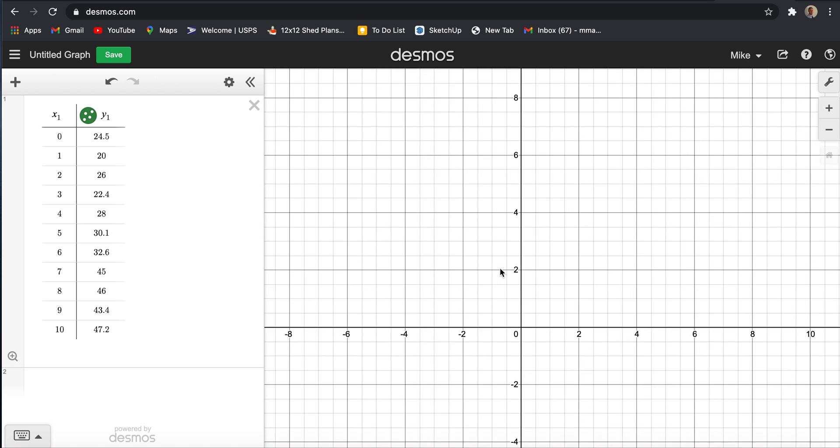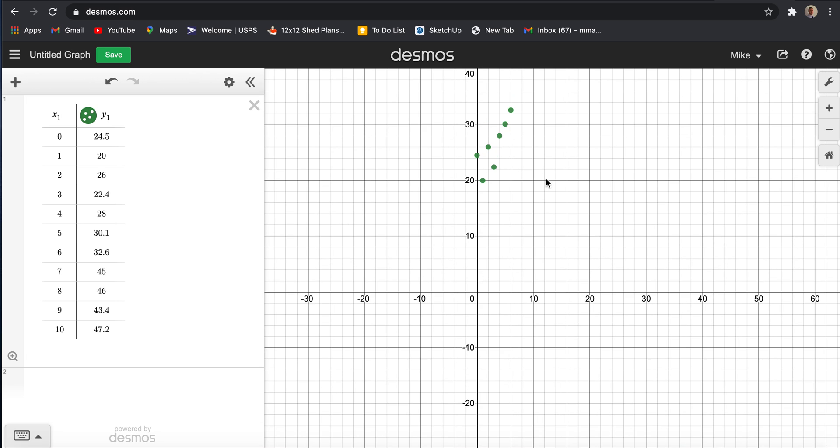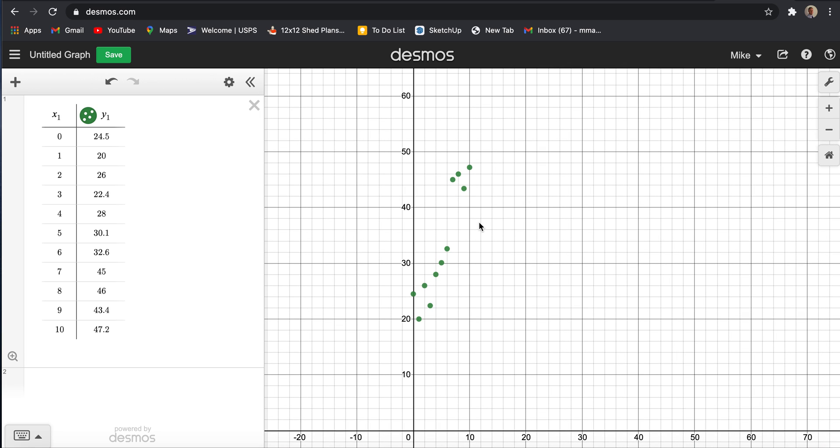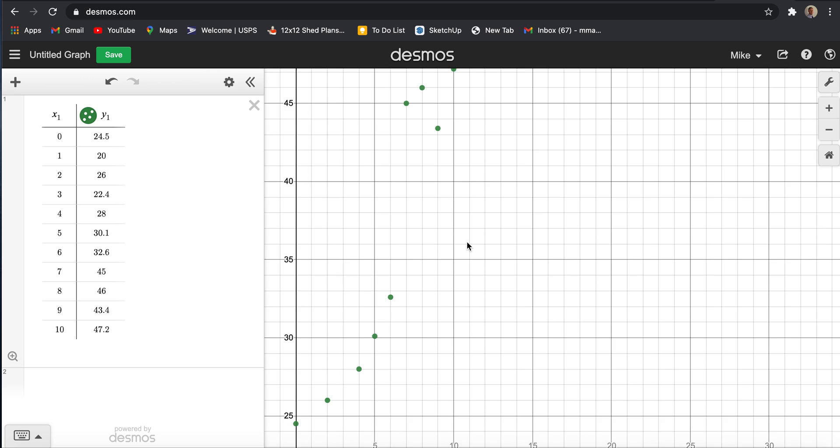So this is a scatter plot that I've created. If I zoom out, there are my points. They're kind of a bit of a cluster. It's a little hard to see them.